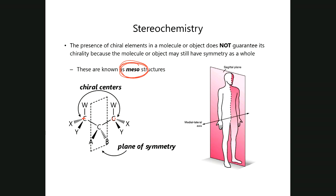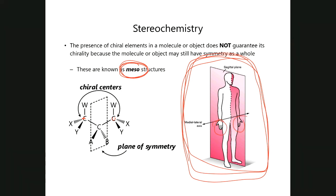The human body, at least from the outside, is technically a meso structure because we have our hands and feet, which are asymmetric. However, if you look at what we call the sagittal plane, the body is symmetric — at least from the outside. If you actually look on the inside, as we know from anatomy and physiology, the heart is pointing towards the left side, the stomach is on one side, the liver is behind it, the spleen is on the opposite side. So it's not completely symmetric when you open it, but from the outside we are symmetric despite carrying chiral elements — our hands and our feet.